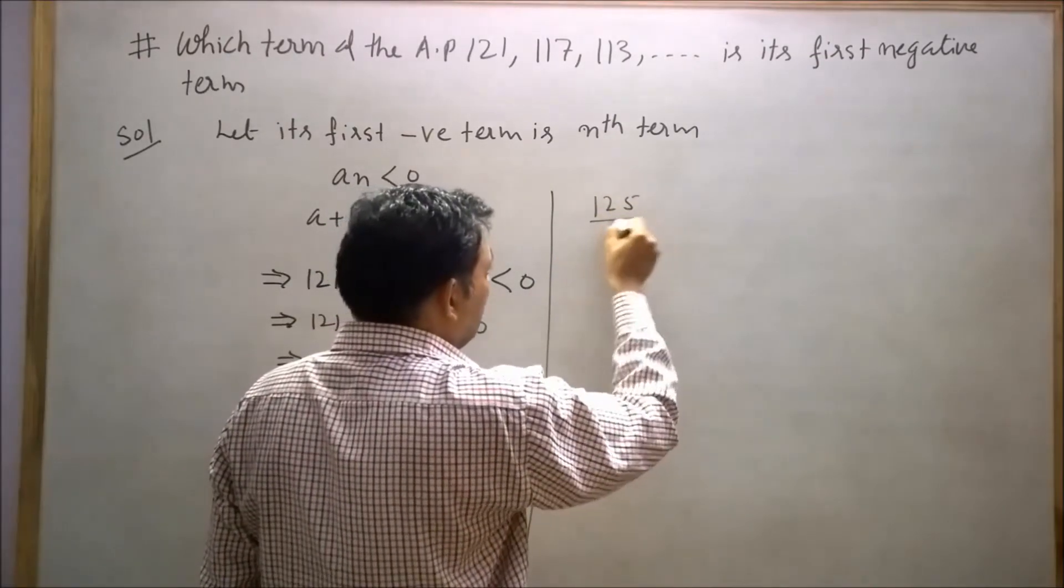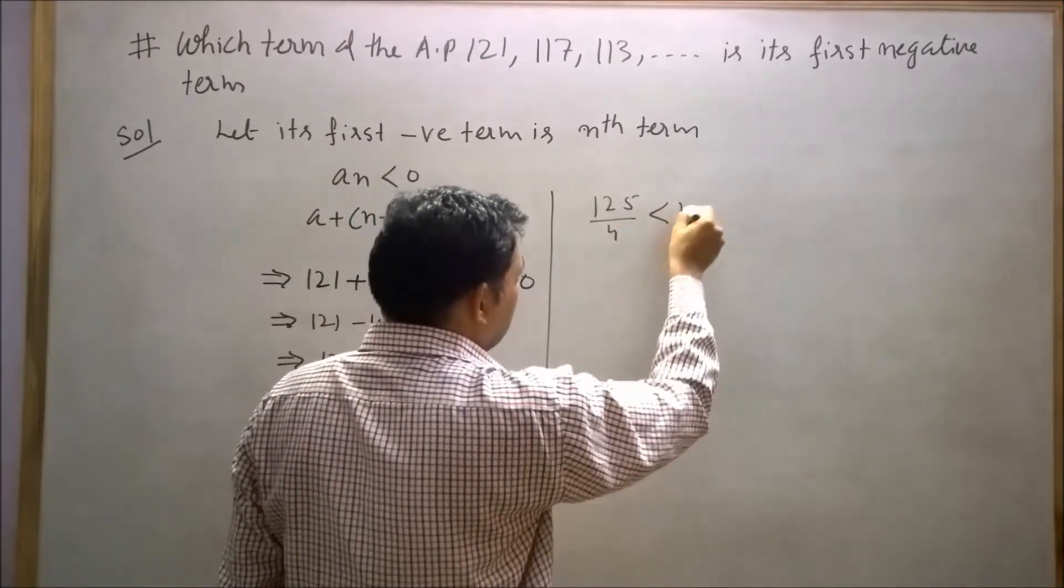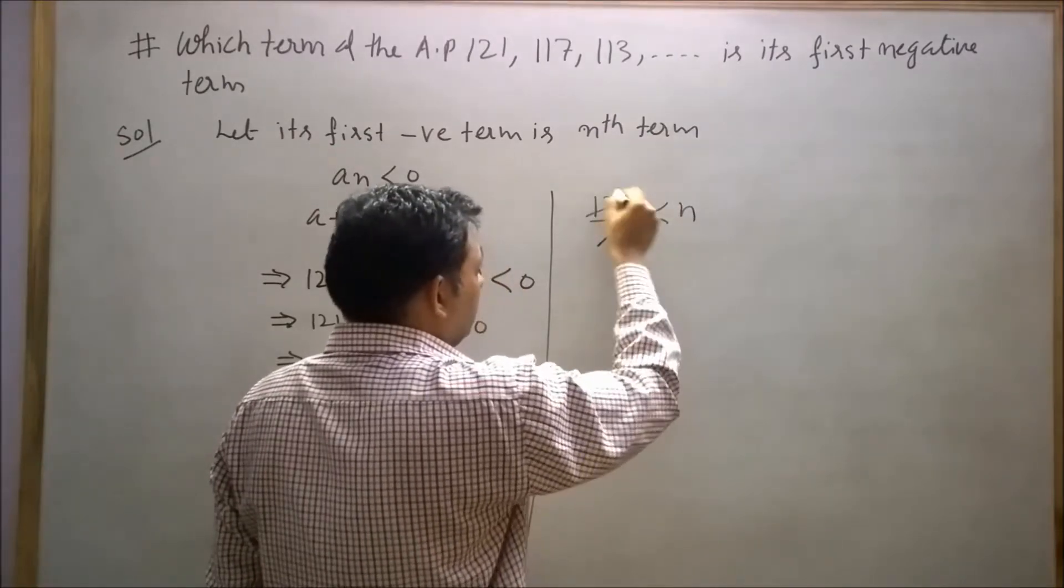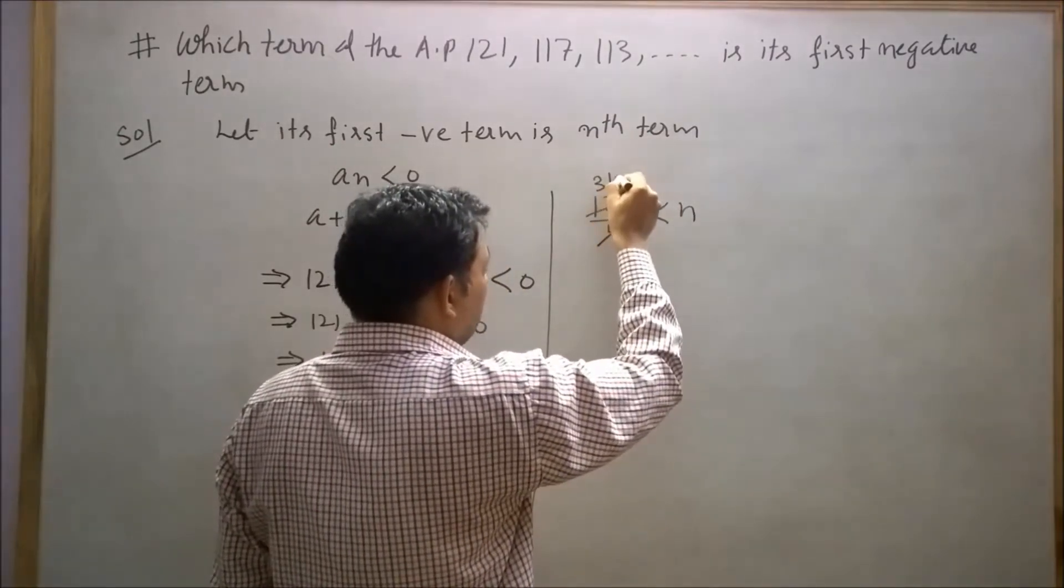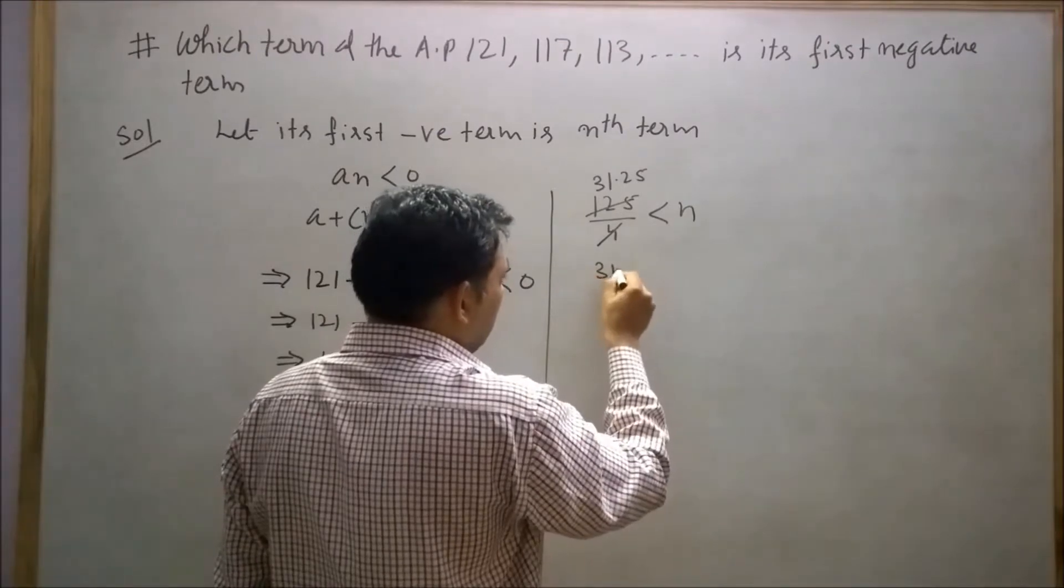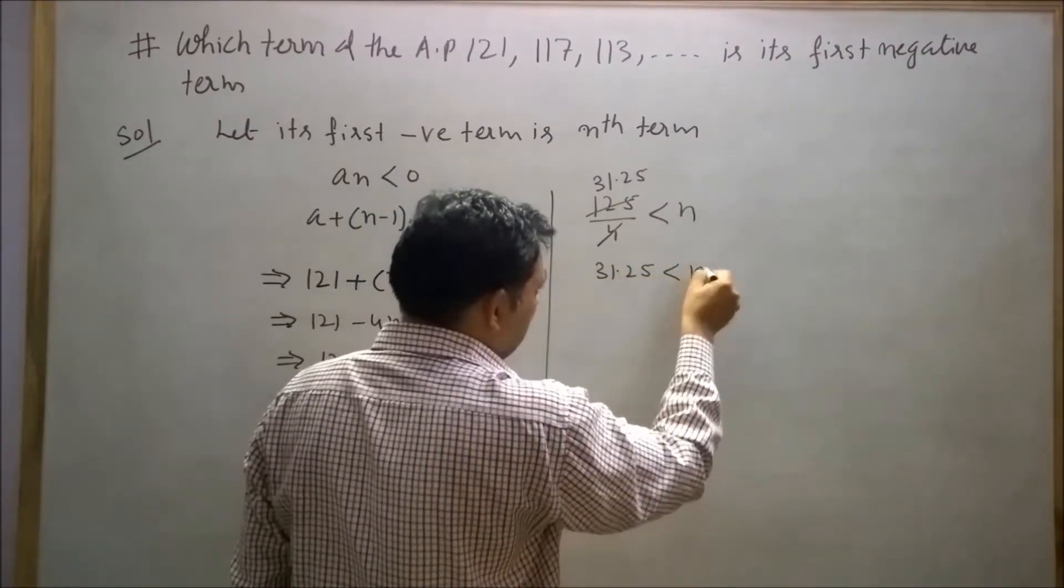125 divided by 4 is less than N, which gives 31.25 < N.